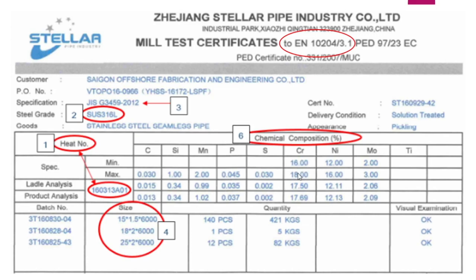For example, chromium is 16 to 18, so our test result must be within this range. But if you see the carbon, it is 0.030 - this is the maximum value. So it can be 0, 0.013, 0.015, but must be less than 0.03. I hope this point is clear to all.